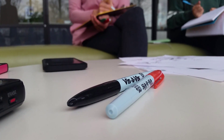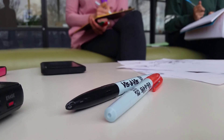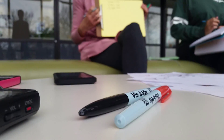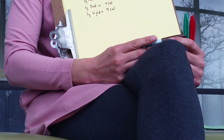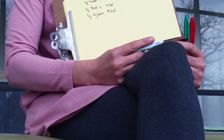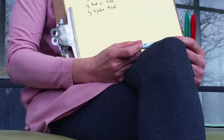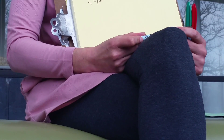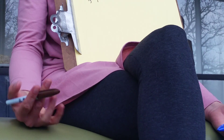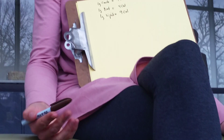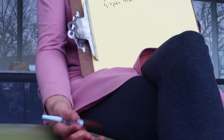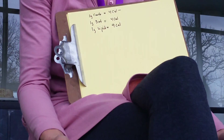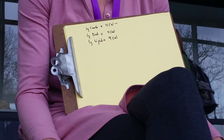Calories per gram of all three nutrients — you should know this by now. One gram of carbohydrate is four calories, one gram of protein is four calories, and one gram of lipid is nine calories.